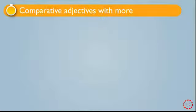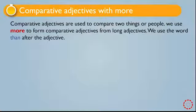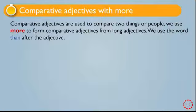In the previous lessons we talked about how to form a comparative adjective by adding -er. This time we make comparative adjectives with more. Comparative adjectives are used to compare two things or two people. We use more to form comparative adjectives from long adjectives — those with more than two syllables — by adding more, not by adding -er.